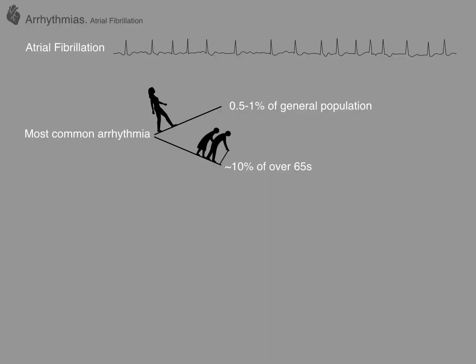Let's start with a focus on atrial fibrillation. One of the reasons it's so important that you have a really good grasp of AF is because it is so common. In the general population up to about one percent will have AF, but once you get to the over 65s, ten percent of the population will have AF. So this is a condition that as a junior doctor you are going to see over and over again and will often be expected to manage.